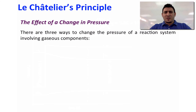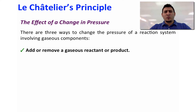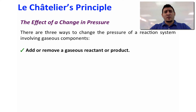Now let's discuss the effect of a change in pressure of a system at equilibrium. There are three ways that we can change the pressure. The first one is adding or removing a reaction component, whether a reactant or product — this can be treated the same way as changing the concentration. So if we add a product, the system will shift to the left; if we add a reactant, the system will shift to the right.